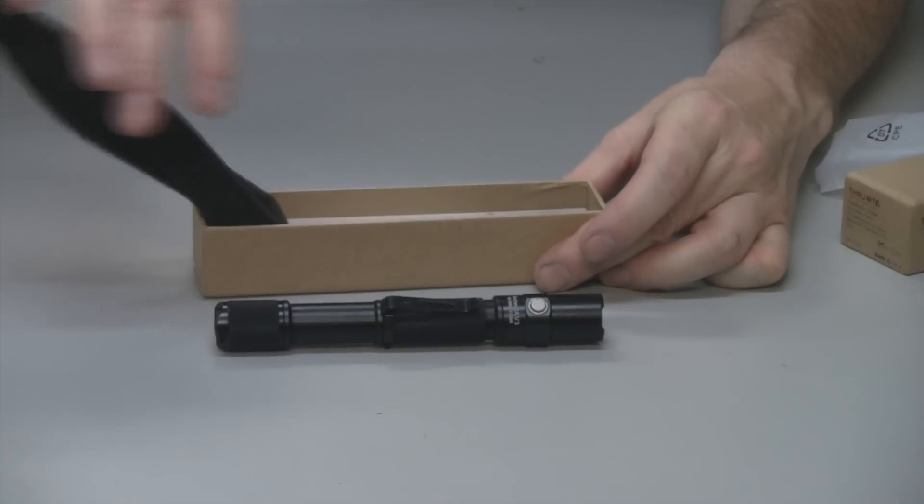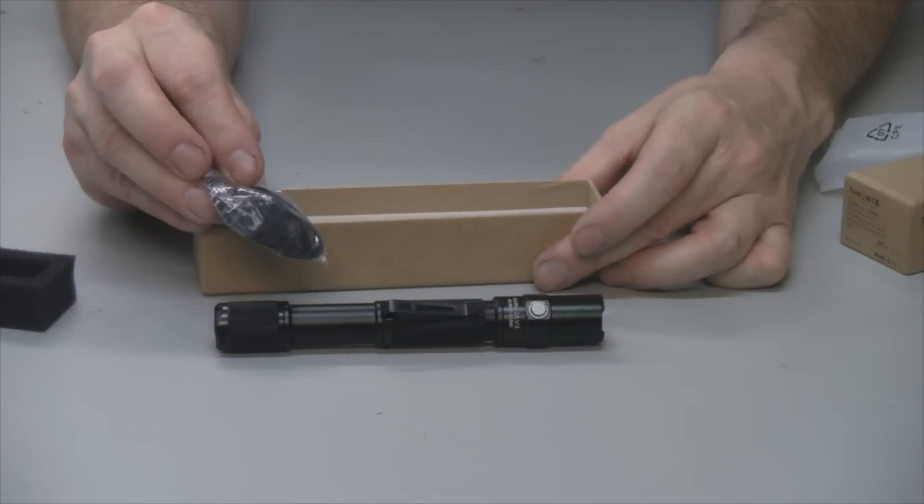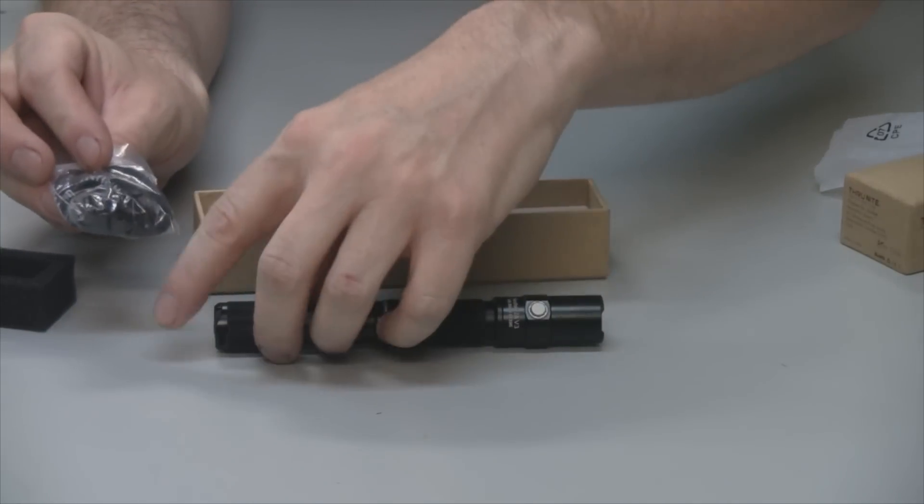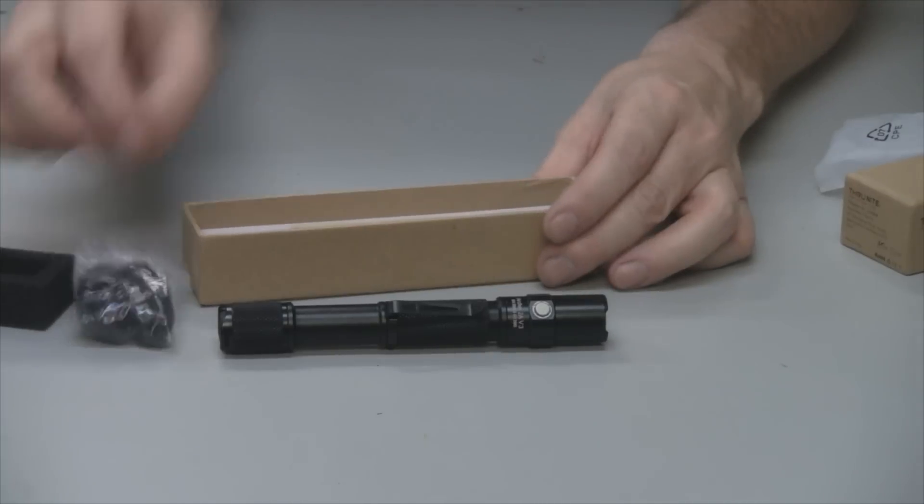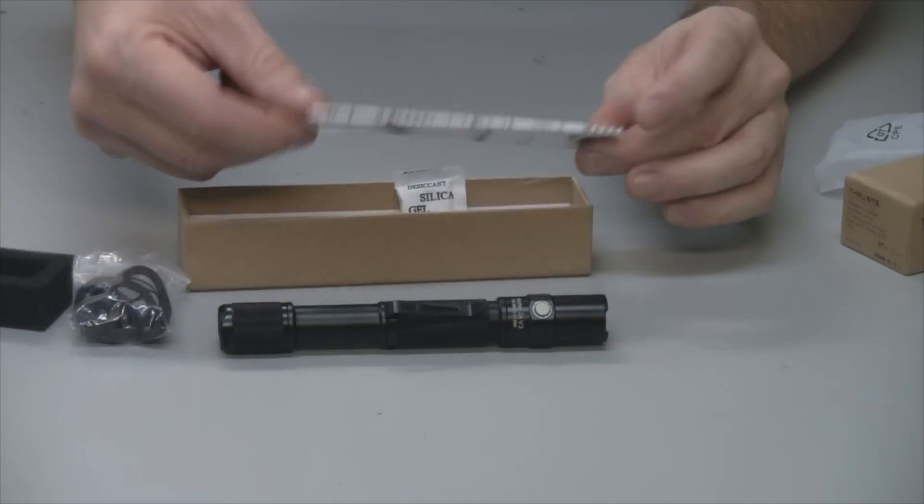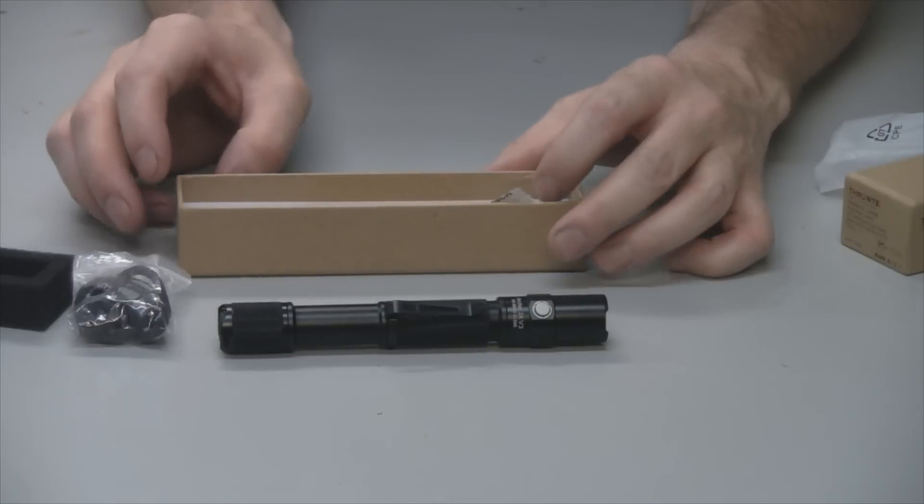And then underneath the foam in the box, this little package has extra O-rings and an extra rubber switch for the back, and also it has rollers and lanyard in there, and there's also instructions. Let's give this a try.